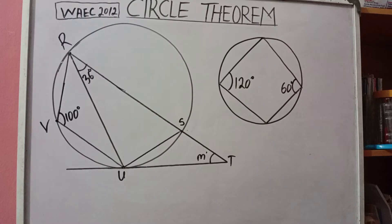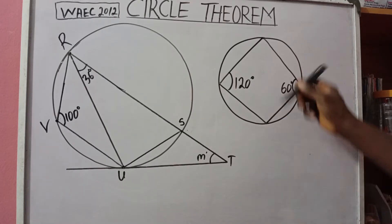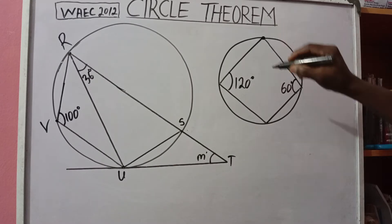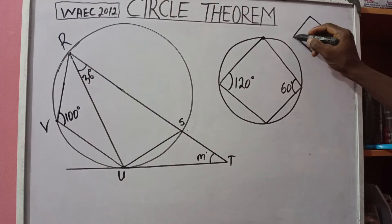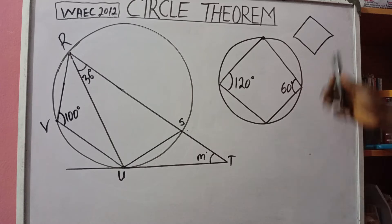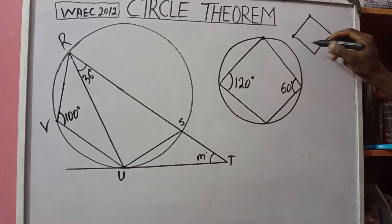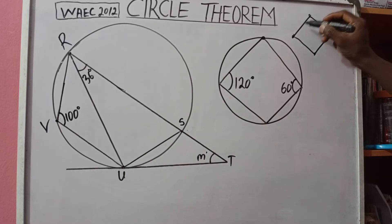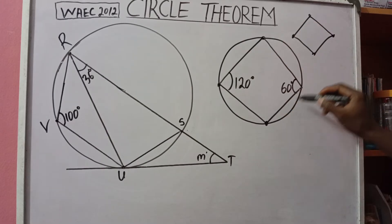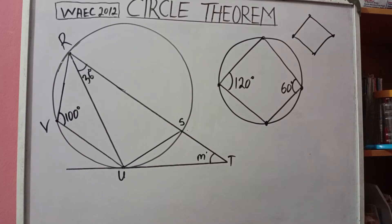When do we call a quadrilateral inside a circle a cyclic quadrilateral? We call it a cyclic quadrilateral when the four vertices — the sharp points of that quadrilateral — all touch the circumference. Remember, a quadrilateral is a plane shape with four sides. When all four sharp points touch the circumference, that is when you call it a cyclic quadrilateral.